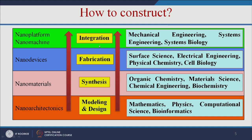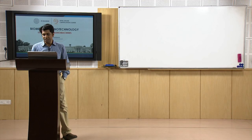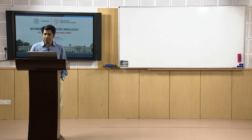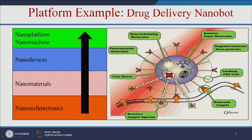What would be the application of this nanomachine? We can make a drug delivery nanoboard — that is, nanorobots — which can precisely reach the tumor location and release the anticancer drug. You can see here it is specifically binding to the cancer cells and releasing the drug. We can make such nano machines not only for drug delivery but also for various other applications.